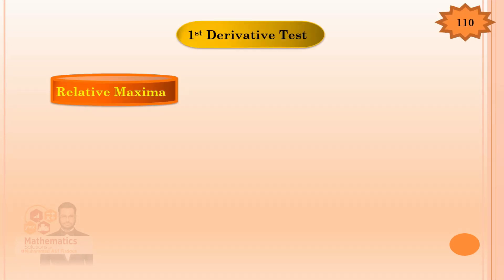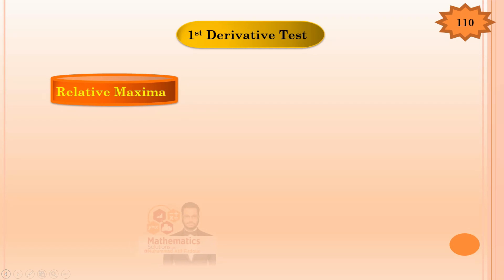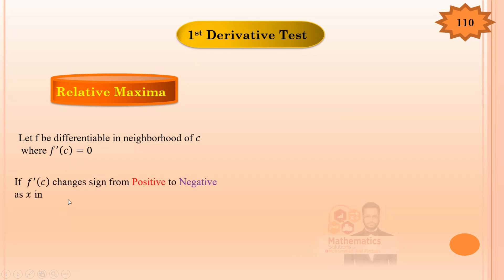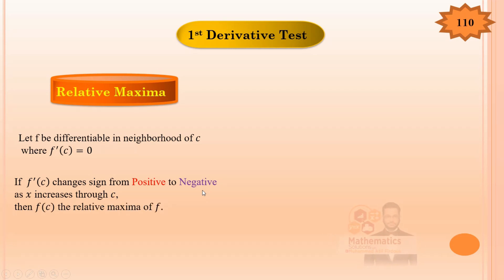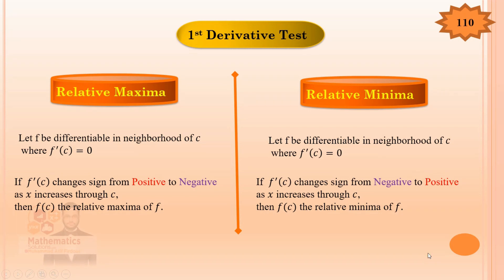To check relative extrema, we use two tests: first derivative test and second derivative test. For the first derivative test for relative maximum: if f'(c) changes from positive to negative, then the function has a relative maximum. If f'(c) changes from negative to positive, then the function has a relative minimum.